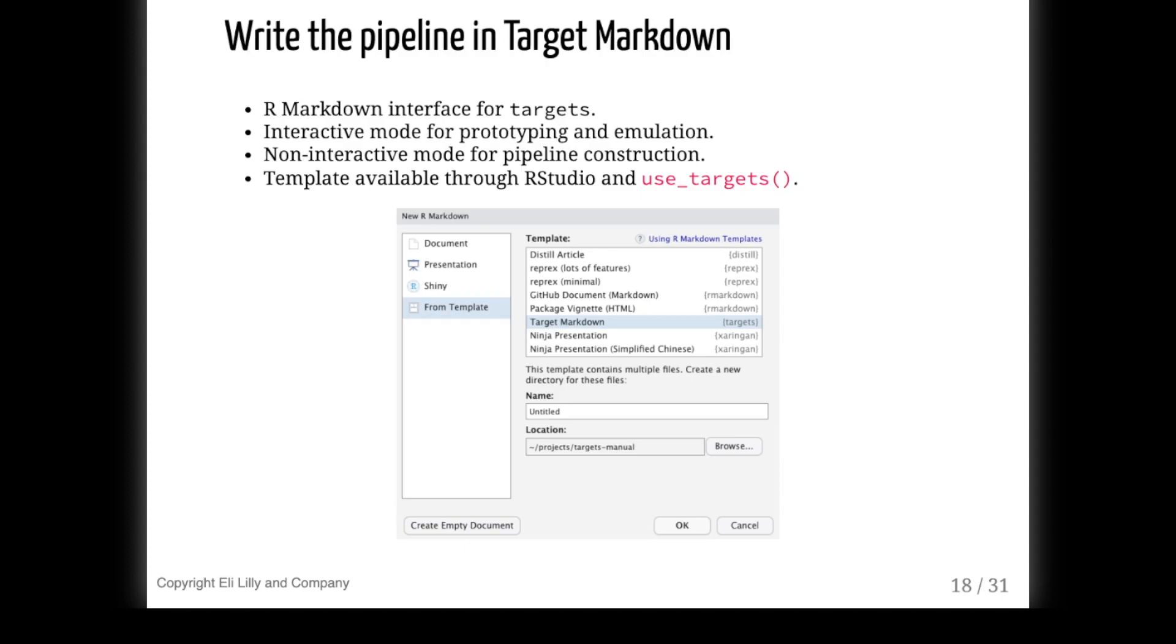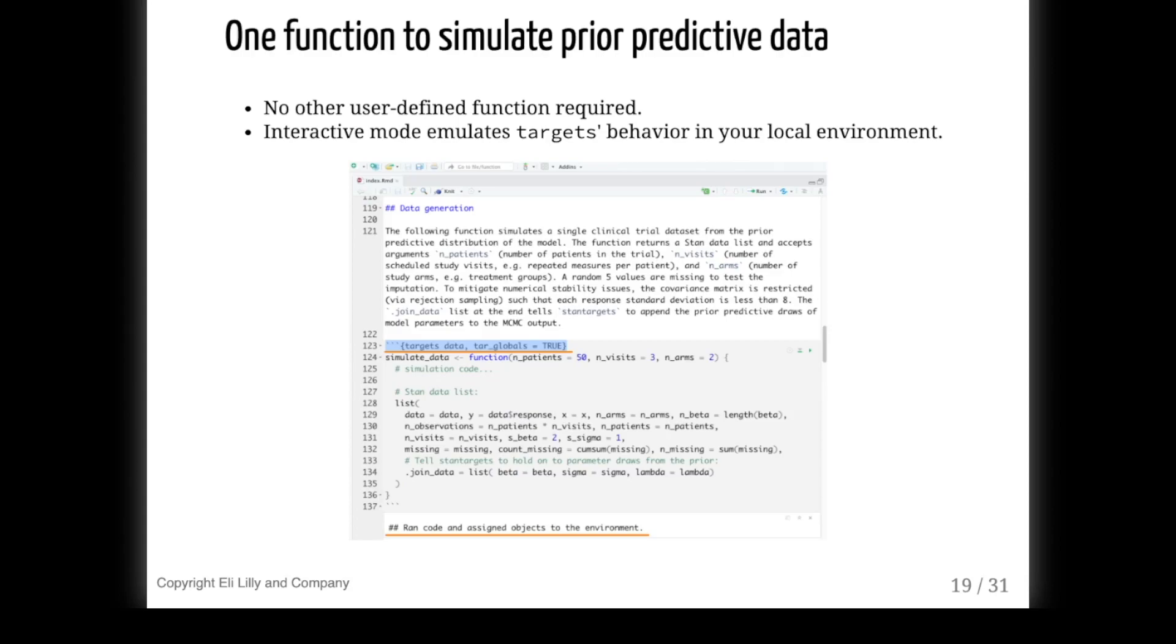There are two ways to use target markdown: there's an interactive mode for testing and prototyping, and there's a non-interactive mode for pipeline construction. What this looks like is you'll use R Markdown pretty much like you would in other situations, but you have a specialized targets language engine that creates a pipeline behind the scenes one code chunk at a time. This works whether you have a single R Markdown report or multiple reports like in a bookdown project. If you have the latest version of targets, you can get an example target markdown document either through the RStudio template system or through the use_targets function.